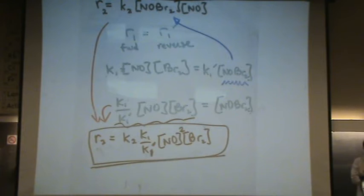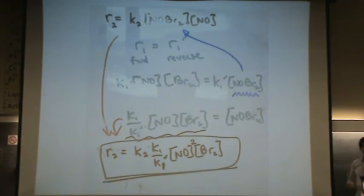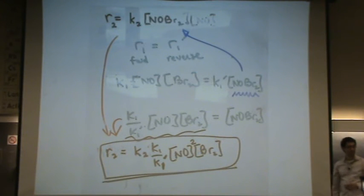How do you know that that's an intermediate? How do I know that NOBr2 is an intermediate? If you look at your reaction, do you see how the overall reaction does not have NOBr2, the reaction at the top? If it doesn't appear there, it's an intermediate. So everything that does not appear in the overall reaction is called an intermediate. It cannot be contained, it cannot be bottled.